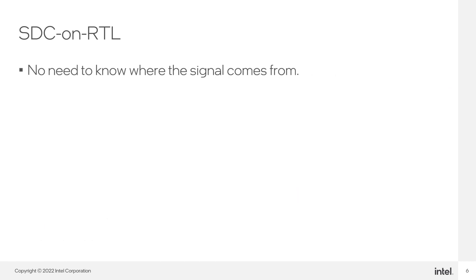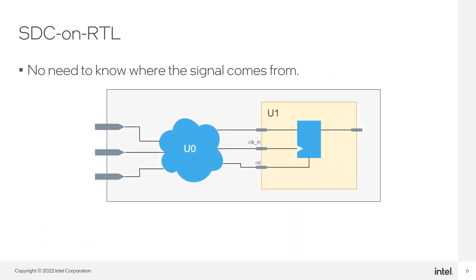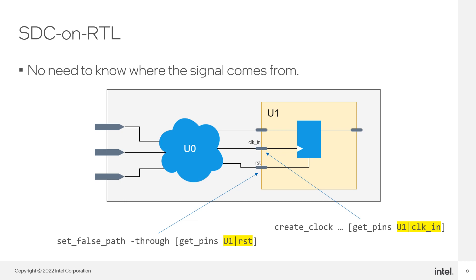With SDC on RTL, you can directly constrain the ports of the modules you have created. It is not necessary to know where a signal comes from to be able to constrain it. This can be beneficial for collaborative designs where work is divided, and where you can now constrain the ports of your modules even without knowing the names of the nodes where signals come from.